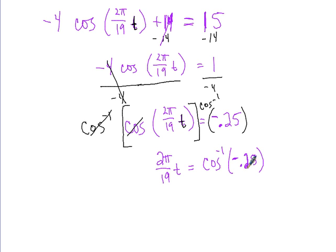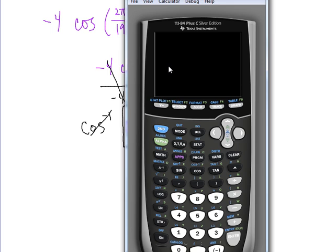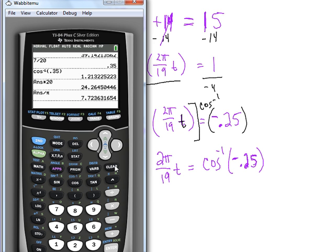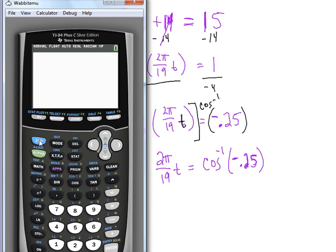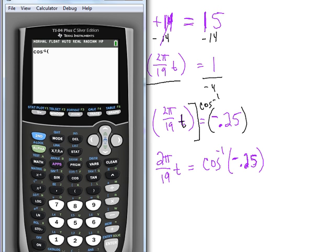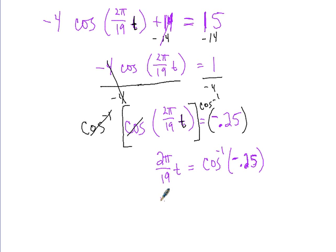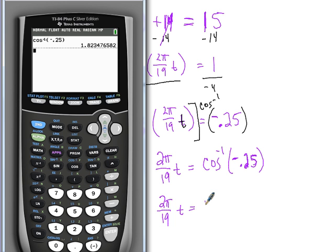We're going to find out at what angle is the cosine negative 0.25. Let's get our calculator out. Turn it on, get rid of all the other junk. So we want to do the inverse cosine, so second cosine of negative 0.25. Enter. And we get 1.825, basically. So 2π over 19 equals 1.823.